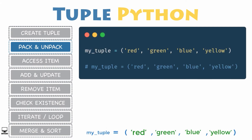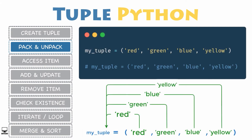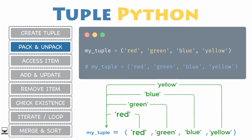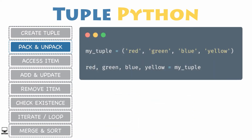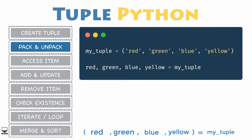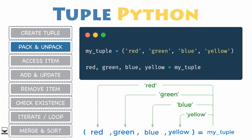Packing and unpacking: when a tuple is created, the items in the tuple are packed together into an object. In this example, the values red, green, blue, and yellow are packed together into my_tuple.